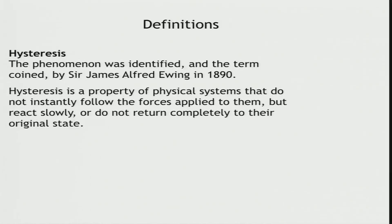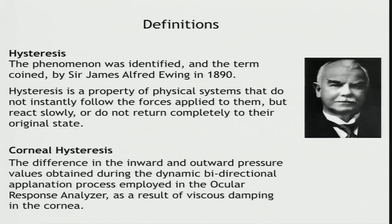What is hysteresis? Hysteresis, first described by James Alfred Ewing, is a property of physical systems that do not instantly follow the forces applied to them, but react slowly or do not return completely to their original state. Corneal hysteresis may be defined as the difference in the inward and outward pressure values obtained during the dynamic, bi-directional application process employed in ORA, as a result of viscous dampening of the cornea.